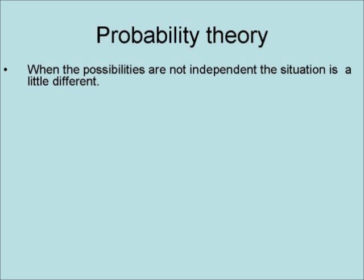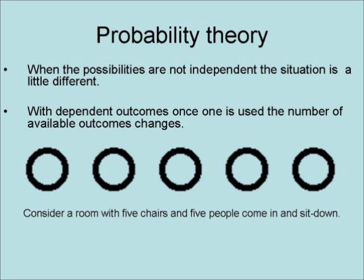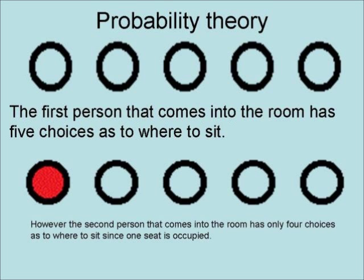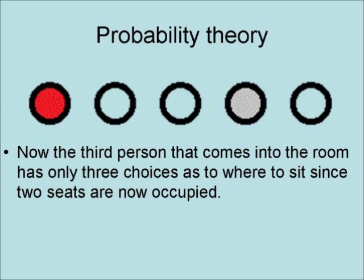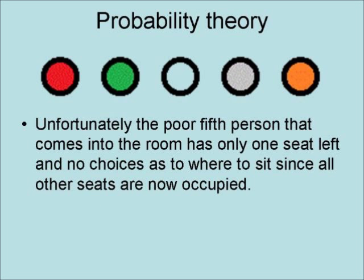When the possibilities are not independent, the situation is a little different. With dependent outcomes, once one is used, the number of available outcomes changes. Consider a room with five chairs and five people coming in to sit down. The first person has five choices of where to sit. The second person has only four choices since one seat is occupied. The third person has only three choices since two seats are occupied. The fourth person has only two choices since three seats are occupied. Finally, the fifth person has only one seat left and no choice.